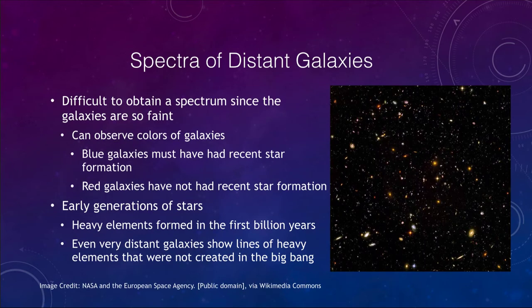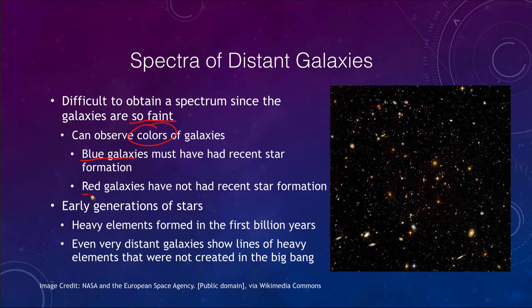So what do we see? We can look at the spectra of galaxies, though one problem is that it is difficult to get a spectrum because galaxies are so faint. However, we can observe the colors of galaxies. A blue galaxy must have had recent star formation, while a red galaxy will not have had recent star formation. Looking at this image, we can see very red galaxies with little recent star formation and bluer galaxies with much more star formation in the recent past.